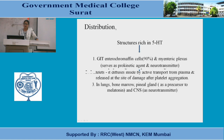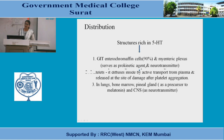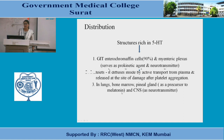Where is 5-hydroxytryptamine distributed? There are several structures rich in 5-hydroxytryptamine. Amongst them is the gastrointestinal tract enterochromaffin cells, where 90% of 5-hydroxytryptamine is located. It is also present in the myenteric plexus, where it serves as a prokinetic agent and neurotransmitter. It is also present in the platelets, where it diffuses inside by active transport from plasma and is released at the site of damage after platelet aggregation. 5-hydroxytryptamine is also present in the lungs, bone marrow, pineal glands as a precursor to melatonin, and in the CNS as a neurotransmitter.